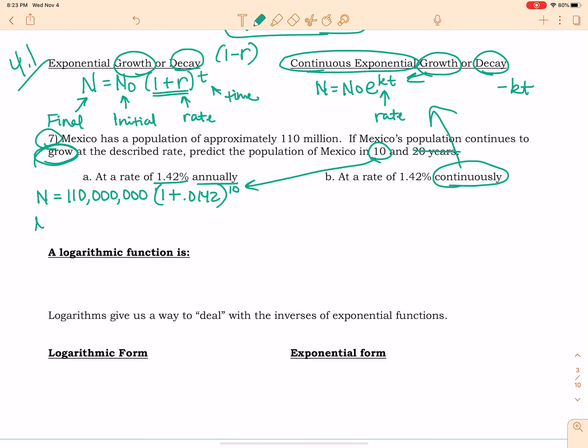Again, this is just calculator work, you're just going to type this into a calculator. That's really all you have to do. So this is going to be an approximate value. It will increase in 10 years to this value right here. I put approximately because you get a decimal and you can't grow the population by part of a person.